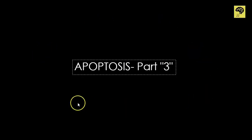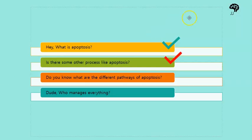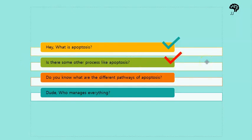We are into Part 3 of apoptosis — hooray! Part 3 means we have completed two parts, in which we covered what apoptosis is and whether there is some other process similar to apoptosis. Now, in this third portion, we will learn what the different pathways of apoptosis are. If you don't know yet, we will learn it today.